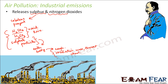You might wonder what activity inside an industry results in the production of sulfur dioxide. Industrial processes handle many materials which contain sulfur. For example, inside an industry there might be electricity generation from coal, oil, or gas.